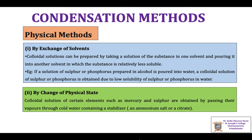When sulfur or phosphorus is dissolved in alcohol, the particle size is less than the colloidal range, i.e., less than 1 nm. When we add the second solvent, due to low solubility, the sulfur or phosphorus particles aggregate to form larger particles in the colloidal range of 1 to 1000 nm, resulting in the formation of colloids.